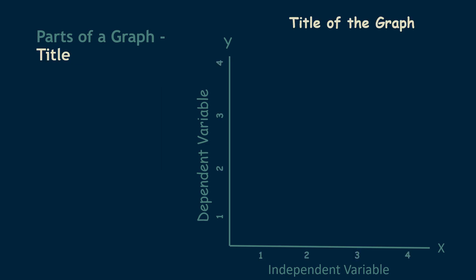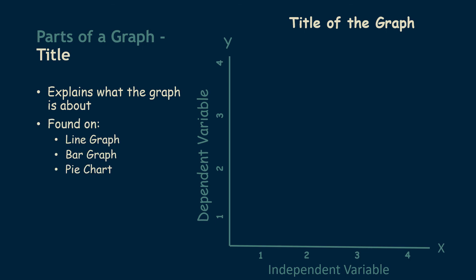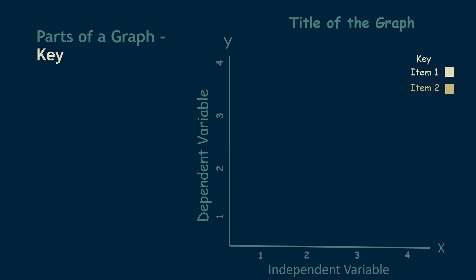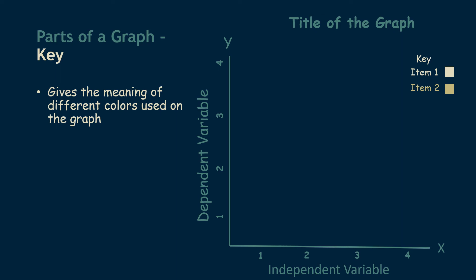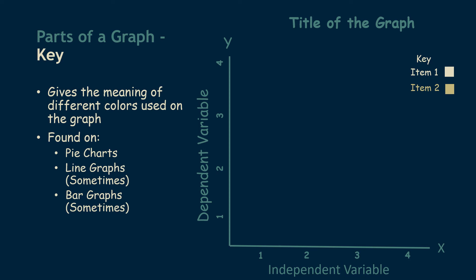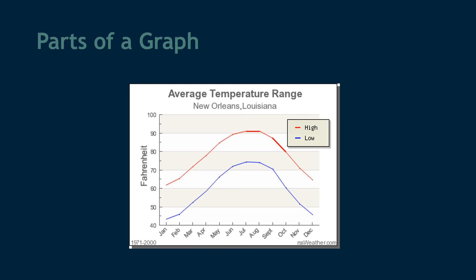Next we have the title of the graph, which sits above the picture part of the graph. The title explains what the graph is about and should give you a good idea of what experiment was conducted. This is found on all three types of graphs. Next is a key, usually off to the side of the graph, which gives the meaning of different colors used on the graph. A key is always found on pie charts and sometimes on line graphs and bar graphs depending on the graph.